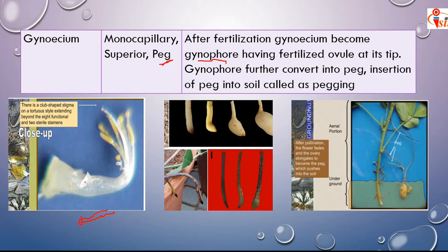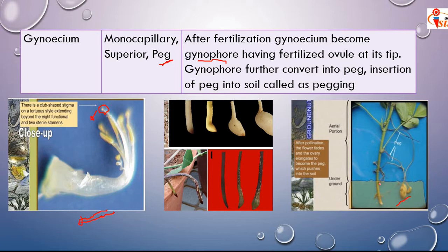After pollination and fertilization, the tip of the gynoecium becomes a gynophore bearing a fertilized ovule at the tip. That fertilized ovule, after forming the fruit, enters the soil and forms a pod. The gynophore then converts into a peg, and the insertion of the peg into the soil is called pegging.